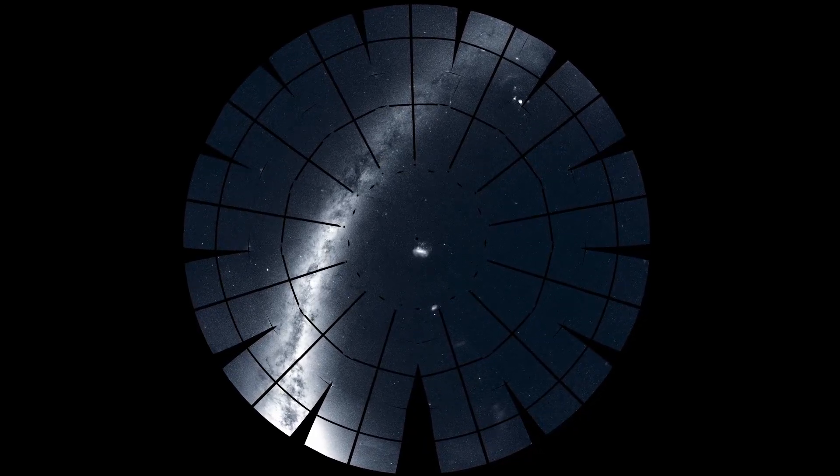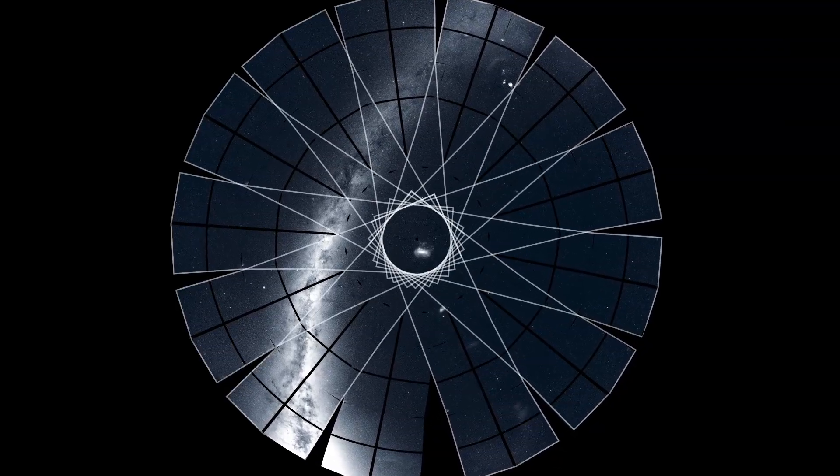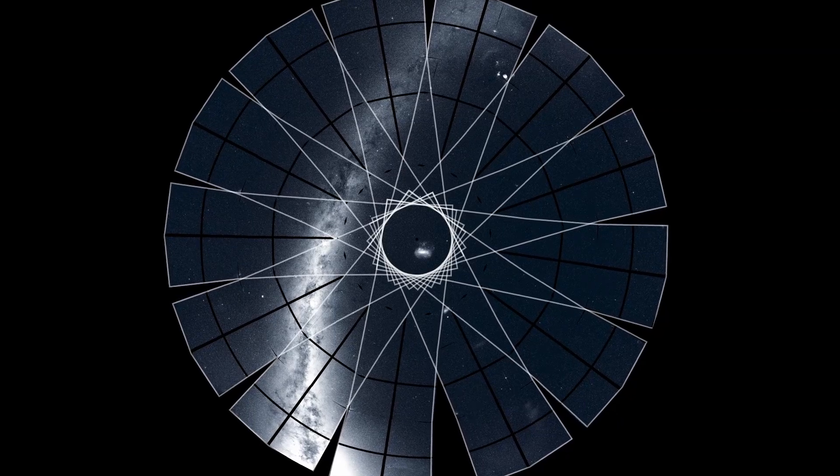To do this, TESS divided the southern sky into 13 sectors and its four cameras monitored each sector for nearly a month.